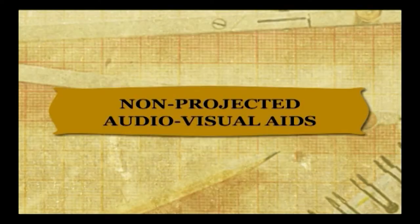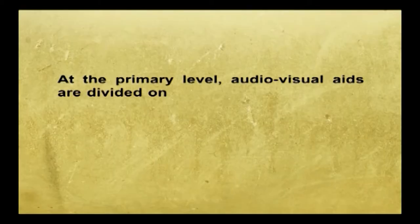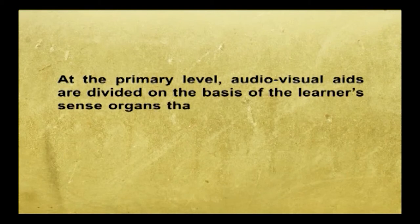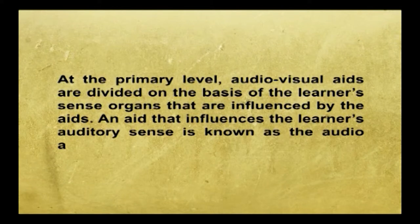There are various types of audiovisual aids — both traditional and modern. At the primary level, audiovisual aids are divided on the basis of the learners' sense organs they influence. An aid that influences the learners' auditory sense is known as an audio aid. Audio aids include record players like MP3, radio, and gramophone.